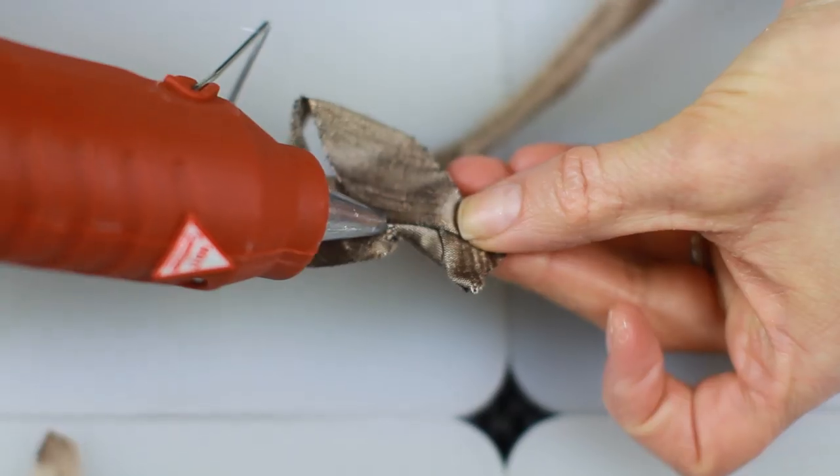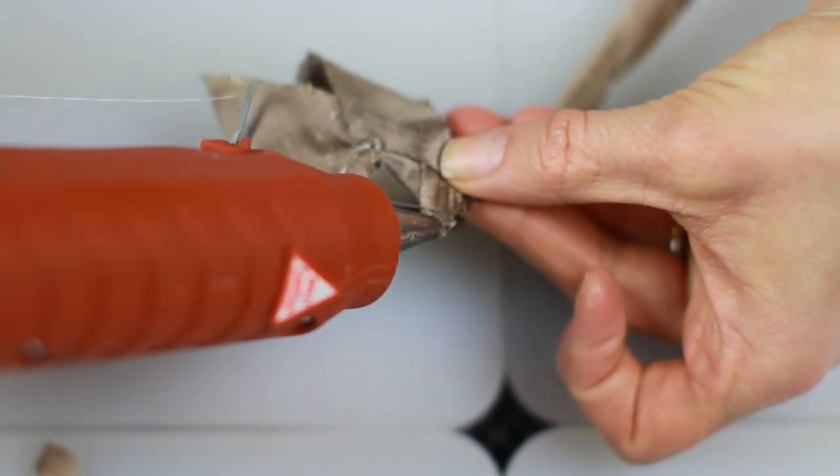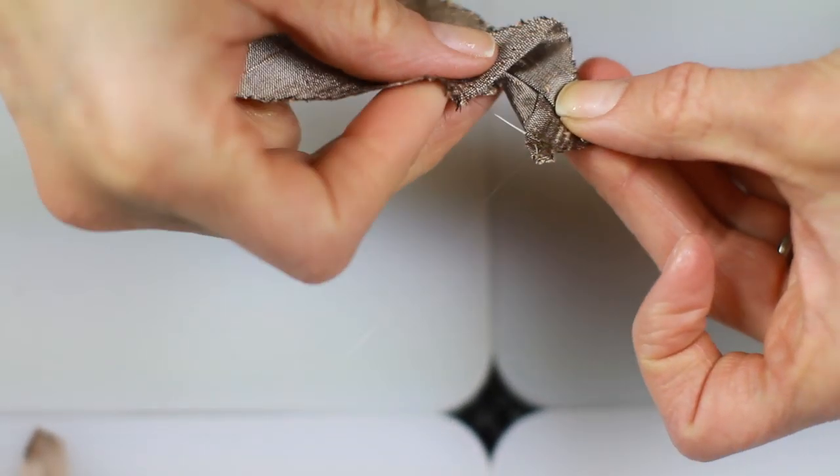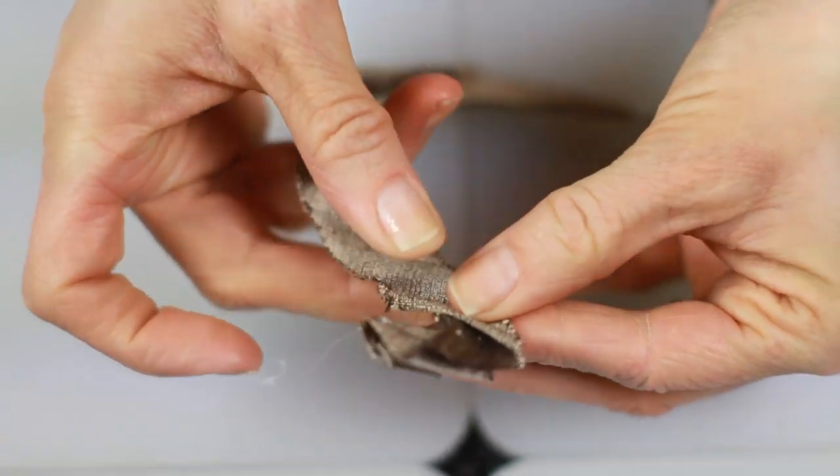And we're just folding around that center knot. That will give us the center of our flower there.